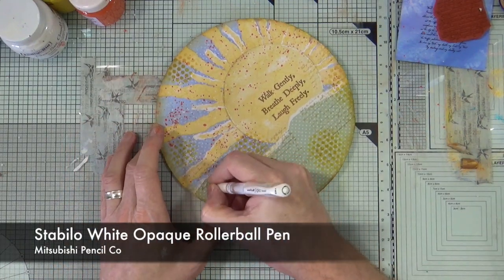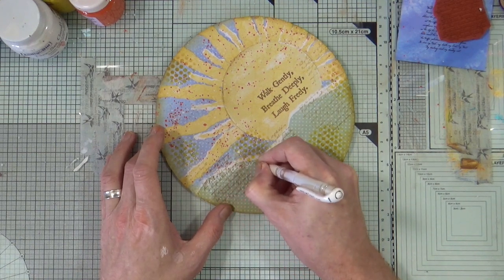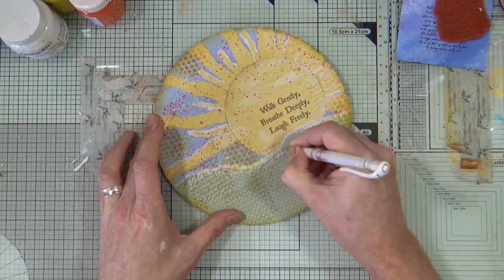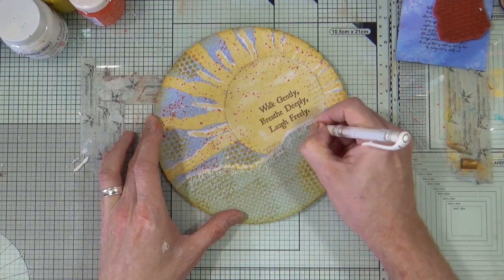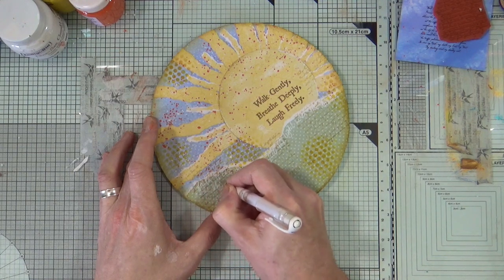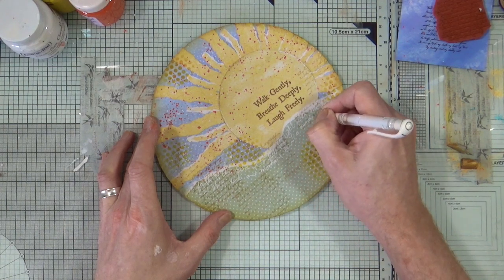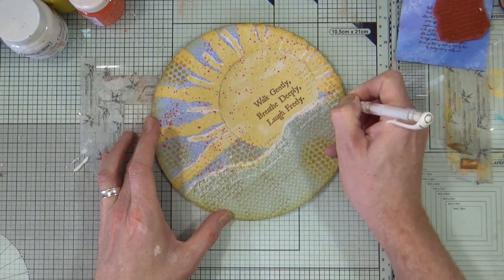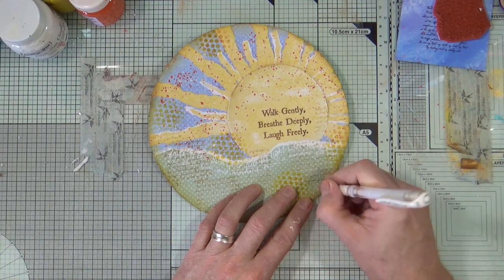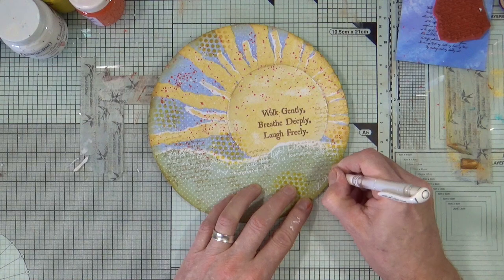Using the Stabilo white opaque rollerball pen, I'm now going to write some hand journaling across the section of the top part of my landscape, the foreground. This isn't really meant to be read by anybody, but I know what it says. It's what we call personal journaling, so I'm just going to add my thoughts and feelings about being early and being there at the start of a new day. And now that I've added my thoughts on getting up out of bed early, all I need to do is sign and date it and then I'm going to call this page done.